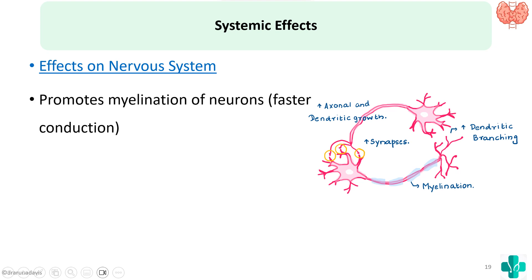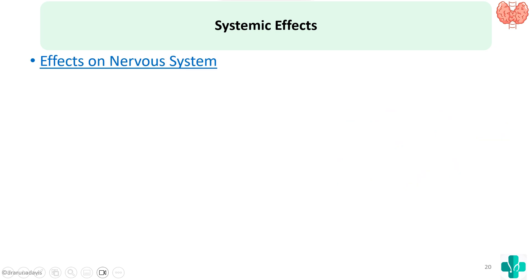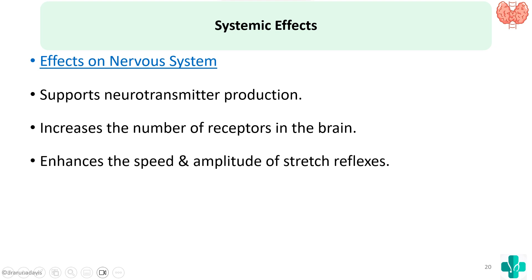Thyroid hormone promotes myelination of neurons for faster conduction, enhances axonal and dendritic growth, facilitates dendritic branching for better connectivity, and aids in the development of synapses. It also increases the amount of neurotransmitters produced and the number of receptors in the brain, thereby enhancing the speed and amplitude of stretch reflexes. That is why in hypothyroidism we have sluggish reflexes — especially the ankle jerk, which is a characteristic feature of hypothyroidism.